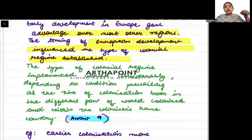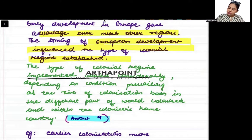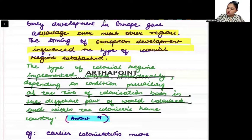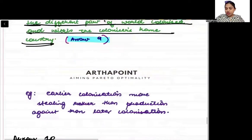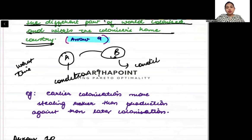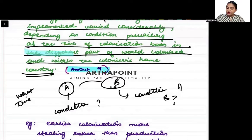It also depended on what kind of condition existed in the colony at that time. Was it a place where the colonizers could sustain for a long period of time, or should they just steal and leave? The type of colonial regime implemented varied considerably depending on the conditions prevailing at the time of colonization — both in different parts of the world being colonized and within the home country. Both things were important.